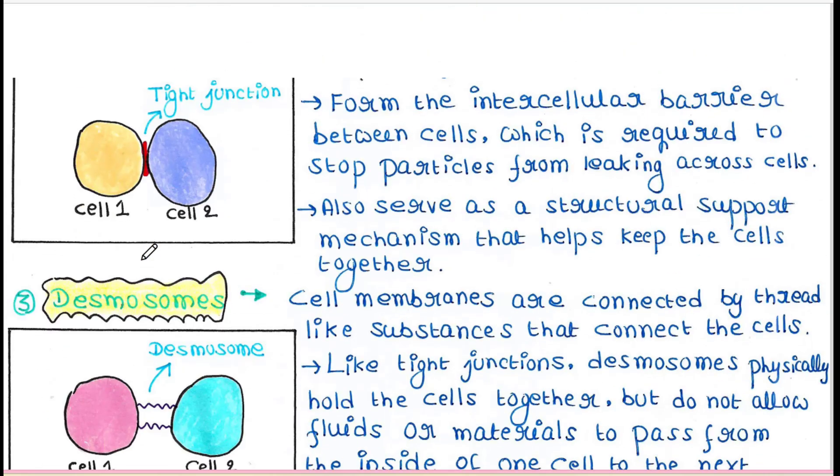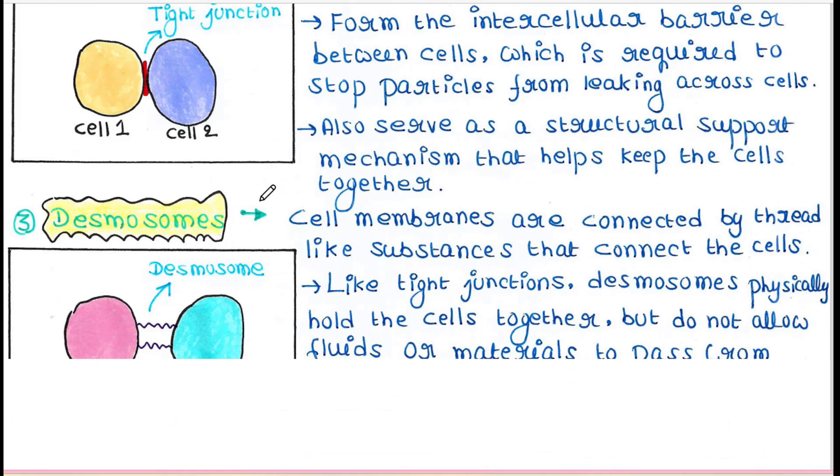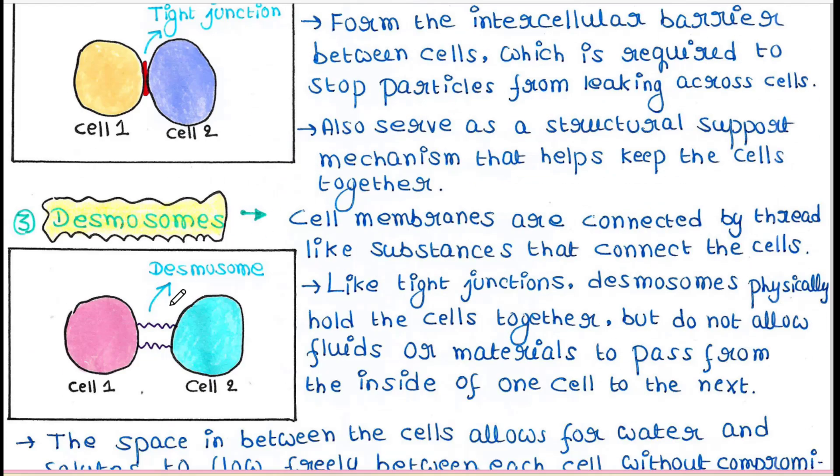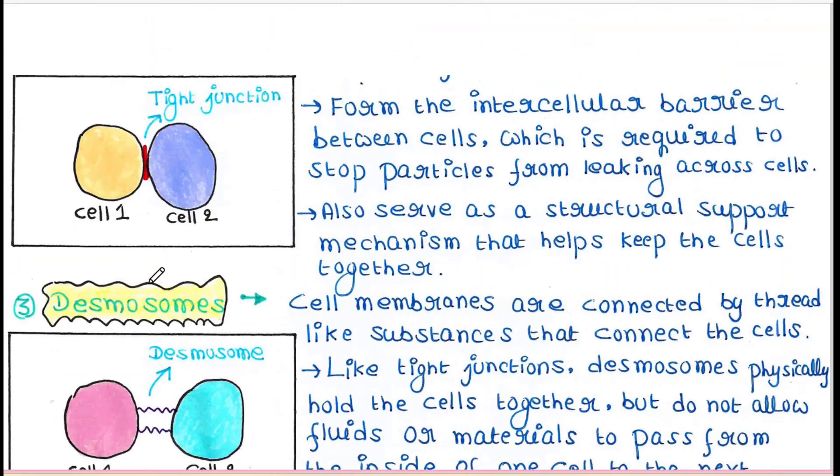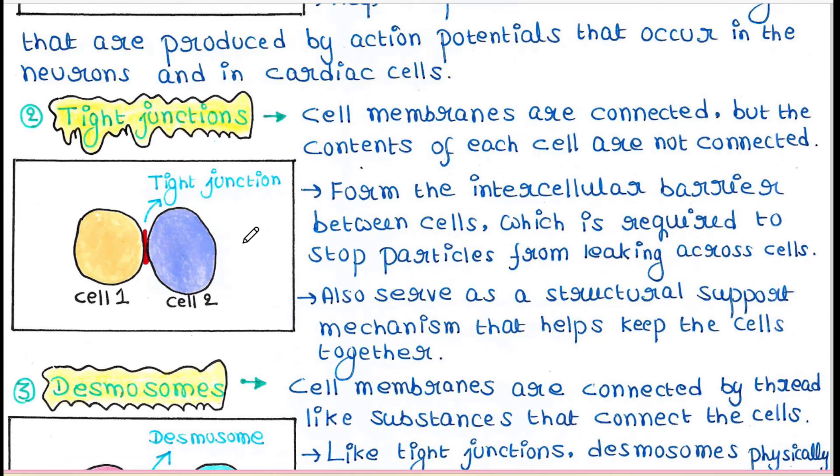Unlike tight junctions, in desmosomes the solute particles or water can flow from this side to this side. That was absent in tight junctions because they were very much tight.